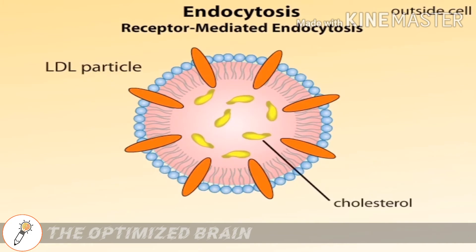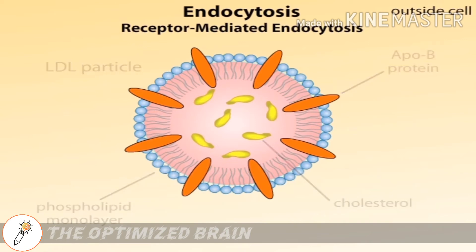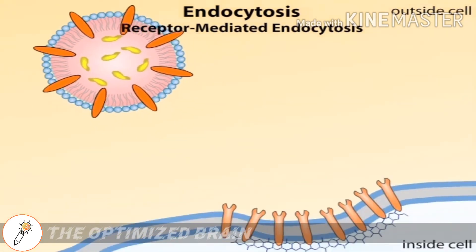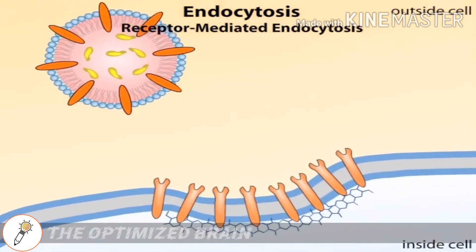A monolayer of phospholipids surrounds the cholesterol core and is embedded with proteins called ApoB. These ApoB proteins are specifically recognized by the receptors in the cell's membrane, and the receptors in the coated pit bind to the ApoB proteins on the LDL particle.